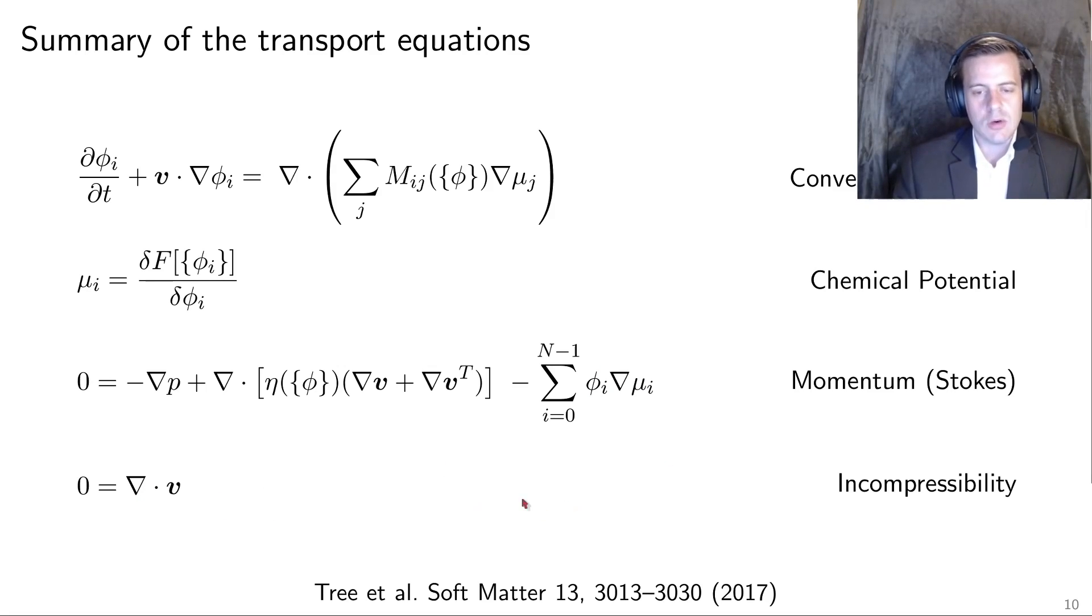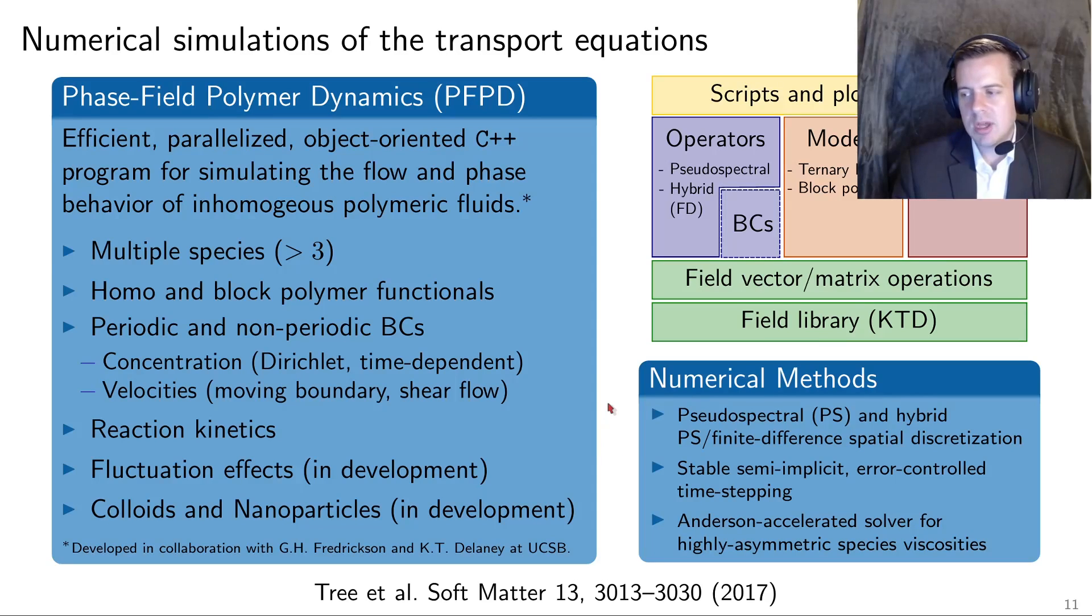When all that's plugged in, you end up with transport equations that hopefully look familiar to you. The transport equations are the convection-diffusion equation where we are now coupled to a chemical potential, and that chemical potential comes from our free energy functional. We have a momentum equation, which doesn't have an acceleration term, so it's a Stokes-like equation, and this extra term couples to the chemical potential. This is going to allow us to have Marangoni stresses when we have gradients of concentration. And then finally, we have an incompressibility term. So now we need to solve this set of nonlinear PDEs.